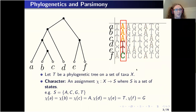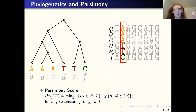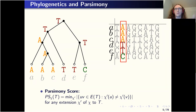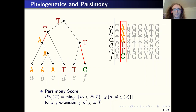For example, in this case we have a character that assigns species A, B, and C to state A; species D and E to state T; species F to state C. Given a particular phylogenetic tree and a character on the leaves, the parsimony score is defined by extending this character to an assignment on the internal vertices in such a way that you minimize the number of edges where your state changes. In this example, we've assigned T to some internal vertices and A to others, and we've changed states twice — two bichromatic edges — so the parsimony score is two.